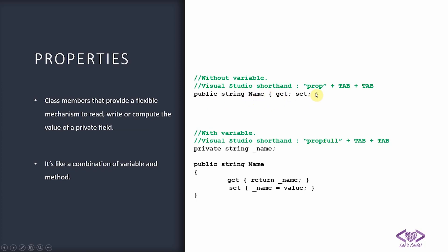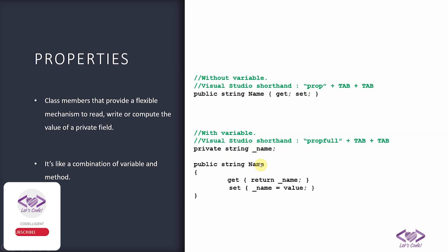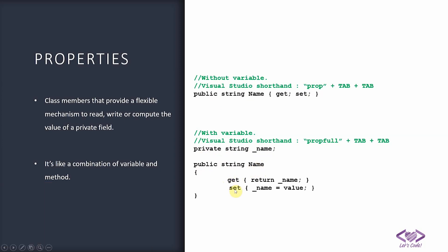Then curly braces with `get;` and `set;` — that is the way you write a simple property. There is another way of writing it where you first declare a private variable and then declare the property with a similar name. So here it would be `private string _name` and then `public string Name`, and inside the body there will be a getter and a setter, each with their own body.